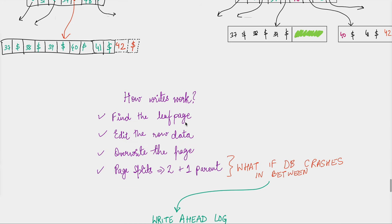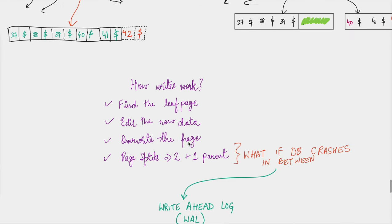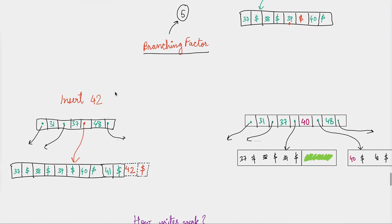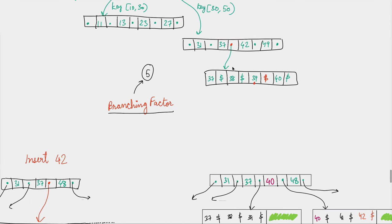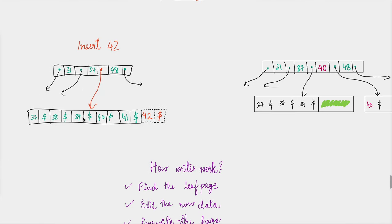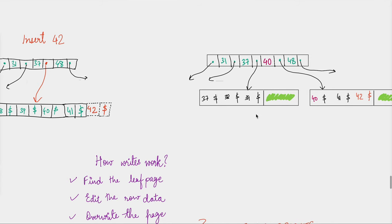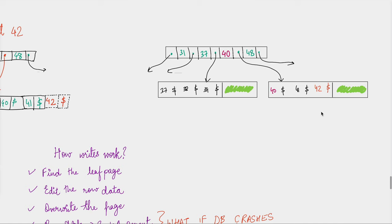For writes, you first find the leaf page for the insertion or update. Starting from the root page, based on the key's range you perform hops to different pages — each page read is a disk I/O operation. When you finally reach the leaf node, you edit the data and overwrite the entire page. The page address doesn't change, so you don't need to update any parent page pointer. However, if a split happens, you need to overwrite two pages plus the parent page — three pages total.